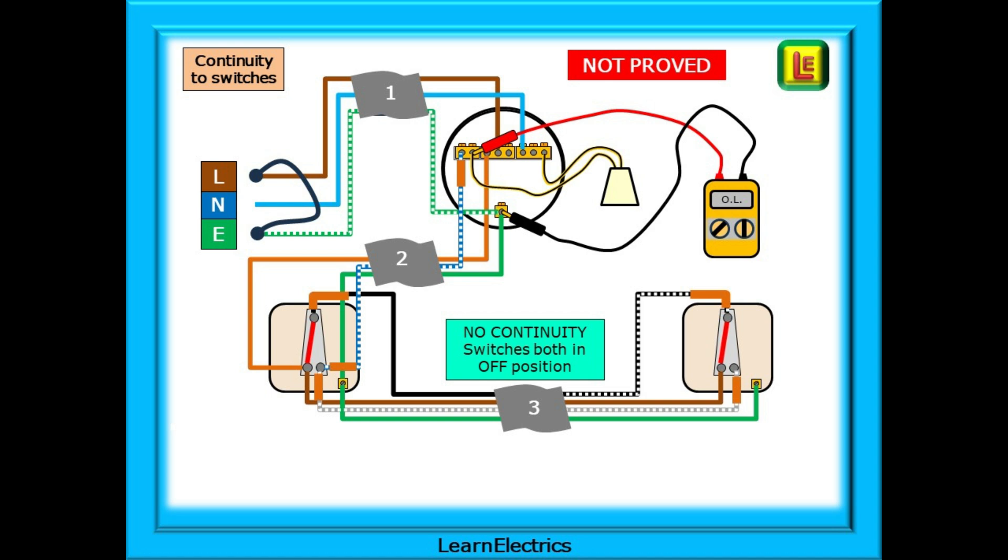In the arrangement shown, the meter will read over limit or OL. There is no continuity. Look at what's happened. The switches are in the wrong position to allow continuity. They are in the light off position and we need to have one of the switches in the on position.